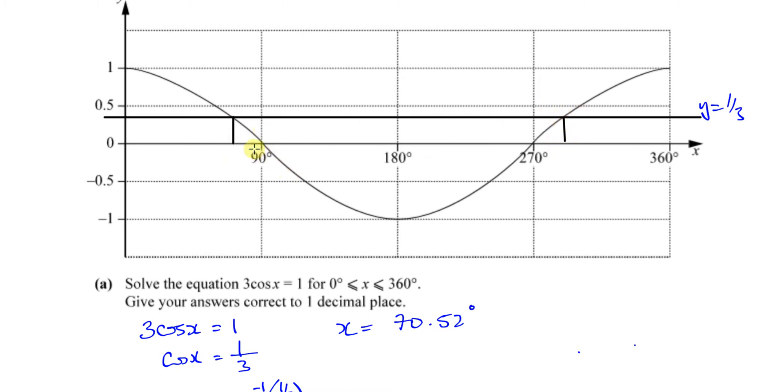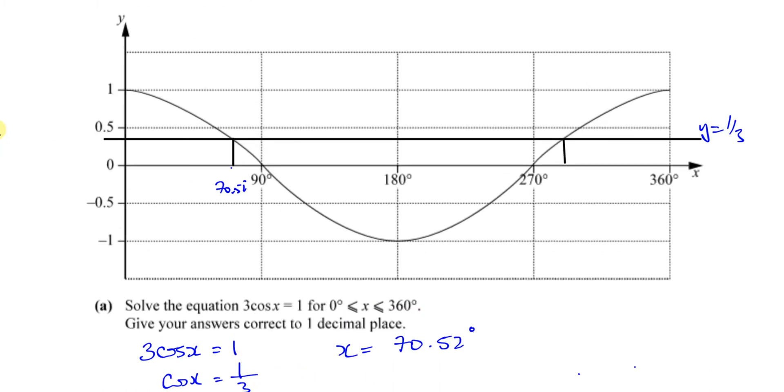The calculator only gave us this one here, which is 70.52. The calculator will only ever give you the principal solution, which for now you can understand as the one that's closest to zero. It will not give you this angle here, although this angle also has the same cosine ratio of a third. In fact, this curve actually continues on and on forever in both directions, and every 360 degrees away you will have the same cosine ratio shared by those angles.